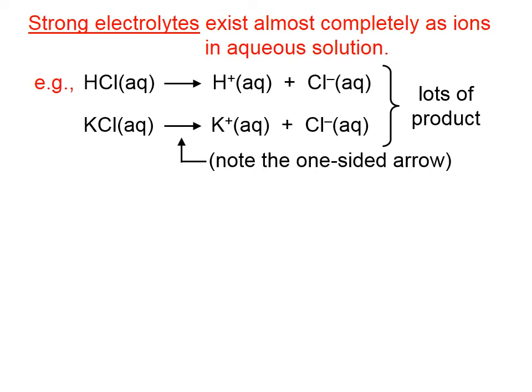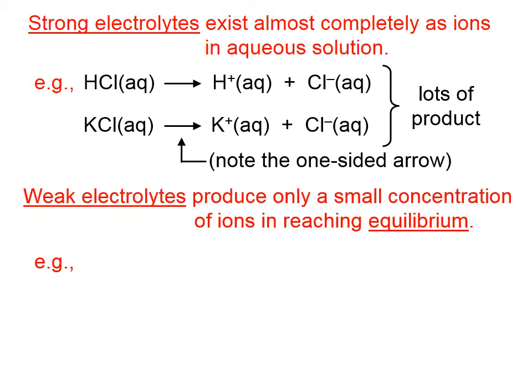Often, strong electrolyte dissociation or ionization equations are written with simply a one-sided arrow, which tells us that what we have in solution is the stuff on the right, and what we don't have in the solution anymore is coupled pairs like what's shown on the reactant side.